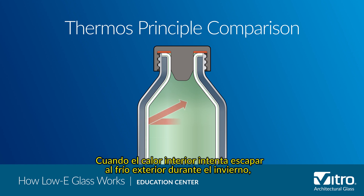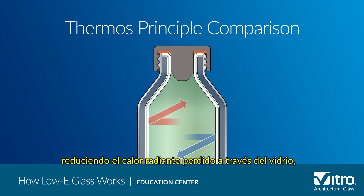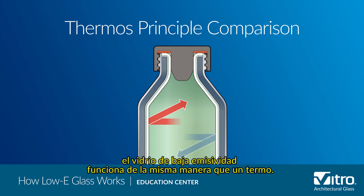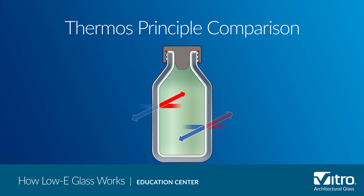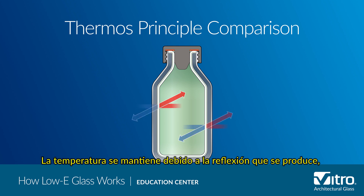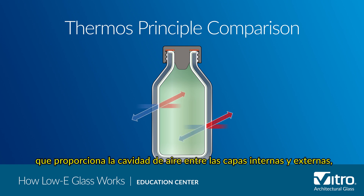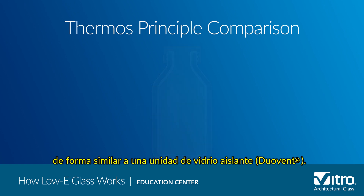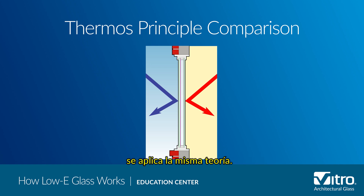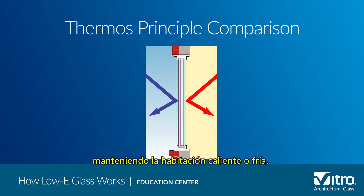When interior heat tries to escape to the cold outside during the winter, the low-e coating reflects the heat back inside, reducing the radiant heat lost through the glass. And the reverse happens during the summer. To use a simple analogy, low-e glass works the same way a thermos does. A thermos has a silver lining that reflects the temperature of its contents back in. The temperature is maintained because of the reflection that occurs, as well as the insulating benefits that the air space between the inner and outer shells provide, similar to an insulated glass unit. Since low-e glass is comprised of extremely thin layers of silver or other low-e materials, the same theory applies. The silver low-e coating reflects the interior temperature back inside, keeping the room warm or cool.